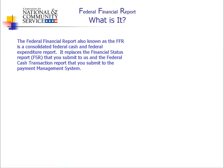The Federal Financial Report, also known as the FFR, issued by the Office of Management and Budget, also known as OMB, is a Consolidated Federal Cash and Federal Expenditure Report. It is replacing the Financial Status Report that you submit to us and the Federal Cash Transaction Report that you submit to the Payment Management System. It also creates a government-wide standard for reporting periods and due dates.